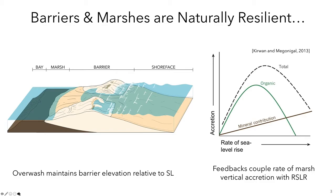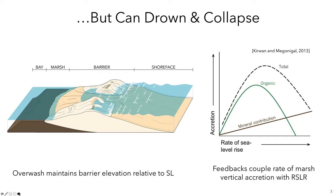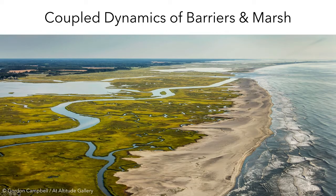Marshes maintain their elevation relative to sea level through both physical and biological feedbacks that couple the rate of sea level rise with the rate of soil accretion, allowing many marshes to survive moderate accelerated sea level rises. But if sea level rise is too high or overwash fluxes too low, barrier islands respond by disintegrating and drowning in place. Similarly, if sea level rise is too fast for sediment accumulation to keep pace, marshes will drown. Recent studies have highlighted the importance of interactions between adjacent subsystems and have brought to light important ways in which barrier islands can impact back-barrier marshes and vice versa.